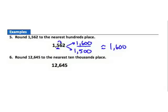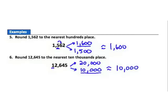Example six: round 12,645 to the nearest ten-thousands place. The digit in the ten-thousands place is the 1. If it increases, we get 20,000; if it stays the same, we get 10,000. Since 10,000 is much closer to 12,645 than 20,000 is, we round down. The answer is 10,000.